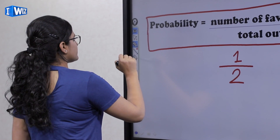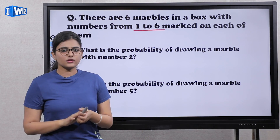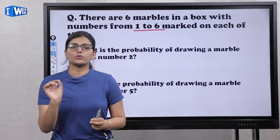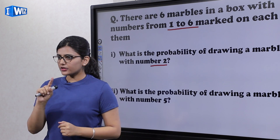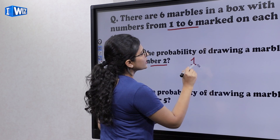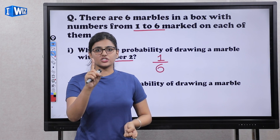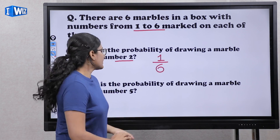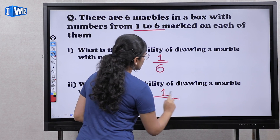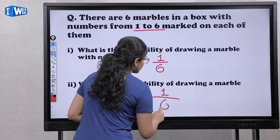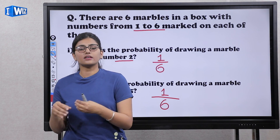There are 6 marbles in a box with numbers from 1 to 6 marked on each of them. What is the probability of drawing a marble with the number 2? Number 2 is one single number, so the probability is 1 by 6 — one favorable outcome out of six total. What is the probability of drawing a marble with number 5? Similarly, 5 is a single number, so the probability is 1 by 6. Every number from 1 to 6 has a probability of 1 by 6.